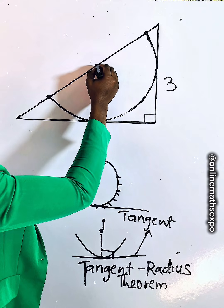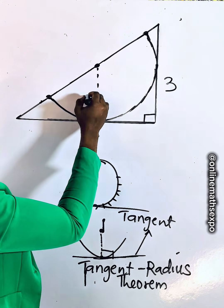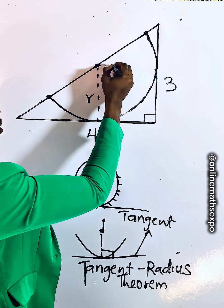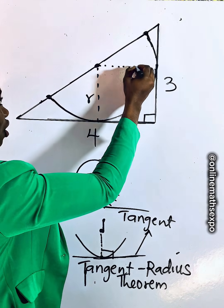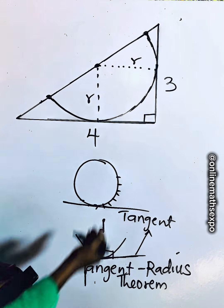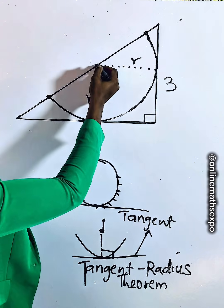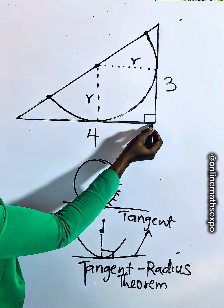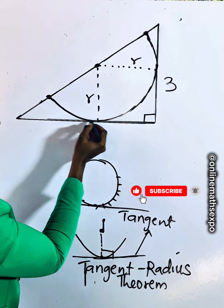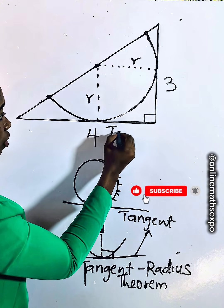We can get another radius from the center down to this point — this is also a radius. We can also get another radius from the center down to this point. You observe that this radius is touching this side of the triangle, which becomes the tangent of this particular semicircle, because the arc of the semicircle is touching this line.